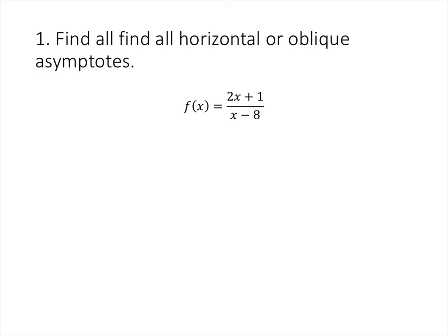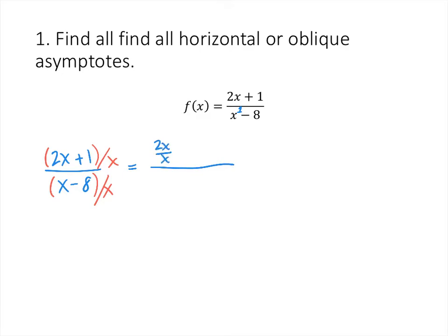So in this case we have x minus 8, and if we think of x as x to the first, we're going to divide top and bottom by x to the first. In other words, we're going to take 2x plus 1 divided by x minus 8, and divide top and bottom by x.